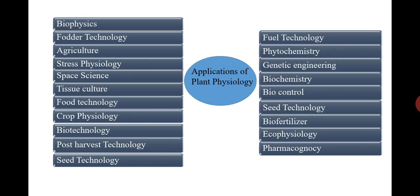Biotechnology is a science which deals with technology applied to organisms. There are a number of biotechnologies — tissue culture is one, greenhouse is a biotechnology, production of enzymes is biotechnology, and fermentation is biotechnology. So a number of these sciences deal with biotechnology, and plant physiology has great importance in biotechnology.